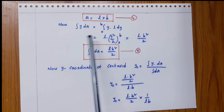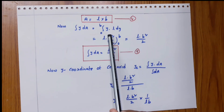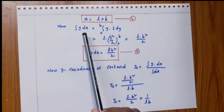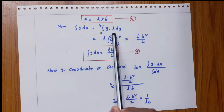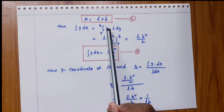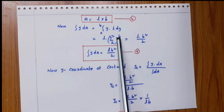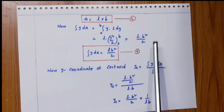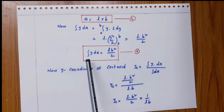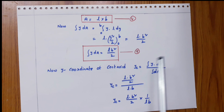Now, integral y dA equals integral from 0 to B of y into L into dy. This equals L into integral y dy, which is y squared by 2, with limits 0 to B. So, integral y dA equals L B squared by 2. This is equation number 5.